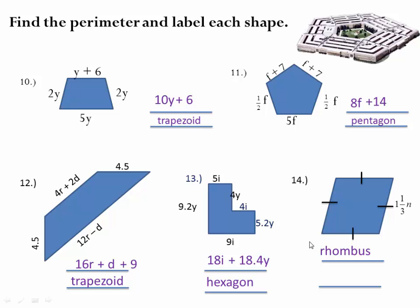If I told you that one of the sides is one and one third n. We know that all the sides are one and one third because it's a rhombus, equal sides. So we need to find the perimeter still.